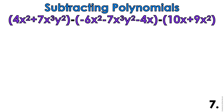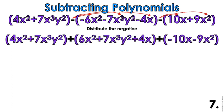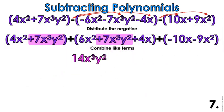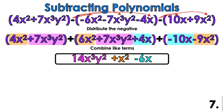Let's do number 7 — still subtracting polynomials, but I have multiple things going on, so we're going to distribute those negatives and change all the signs. Now I combine my terms. x-cubed y-squared — they go together: 7 plus 7 is 14. Then my x-squares: 4 plus 6 minus 9 gives me 1x-squared. And then the x's: 4 minus 10x gives me negative 6x. I combined all my like terms!